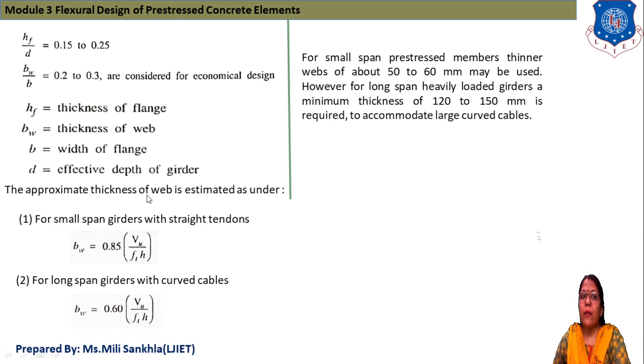The approximate thickness of web is estimated: for small span girders with straight tendons, BW = 0.85 × VU / (Ft × H). For long span girders, width of web equals 0.60 × VU / (Ft × H). For small span, stressed members with thinner web of about 50 to 60 mm may be used, and for long span heavily loaded girder, minimum thickness is 120 to 150 mm.